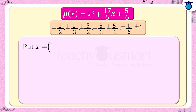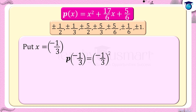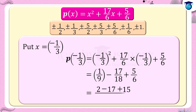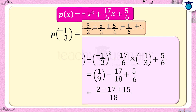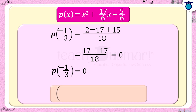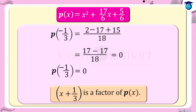Put x equals minus 1/3: p(minus 1/3) equals (minus 1/3) squared plus 17/6 times (minus 1/3) plus 5/6, equals 1/9 minus 17/18 plus 5/6, equals (2 minus 17 plus 15) divided by 18, equals 0 divided by 18, equals 0. That is, p(minus 1/3) is equal to 0. So x plus 1/3 is a factor of p(x) by the factor theorem.